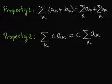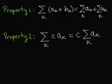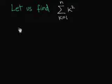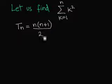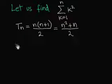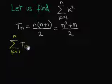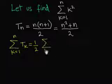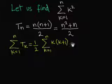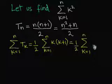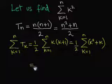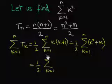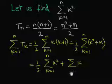Let us try now and find the sum sigma from k equal to 1 until n of k square. We are tempted to use the formula we found before. That is t sub n equal to n times n plus 1 over 2, which is equal to n square plus n over 2, and to add the terms from 1 to n. Using the sigma notation, one can write sigma from k equal to n of t sub k is equal to 1 over 2 sigma from k equal to 1 to n of k times k plus 1. And this is equal to 1 over 2 sigma of k squared plus sigma of k.